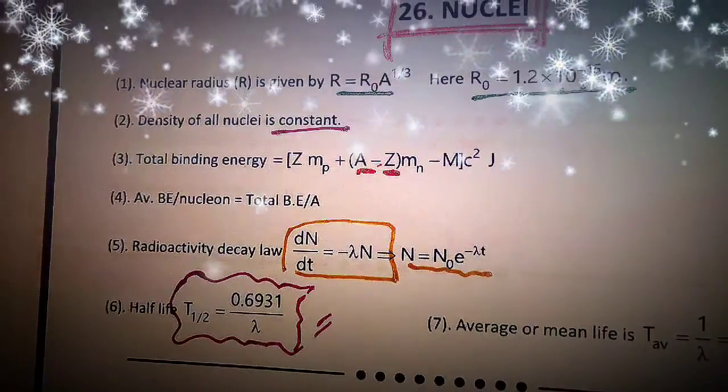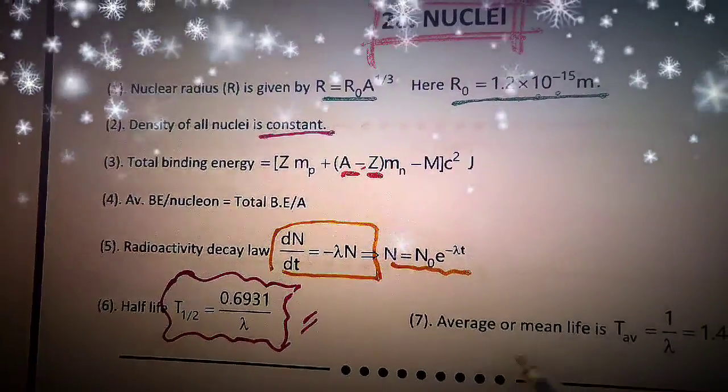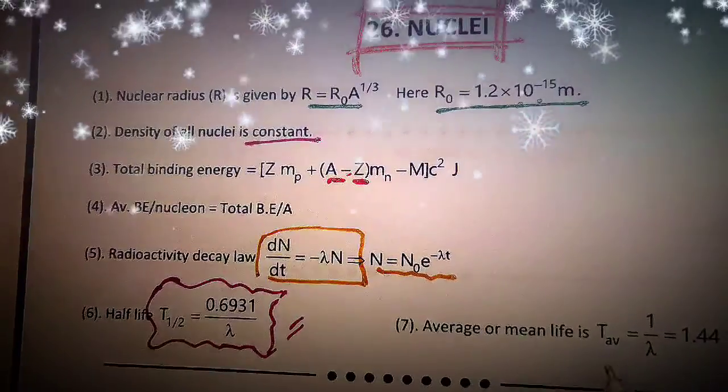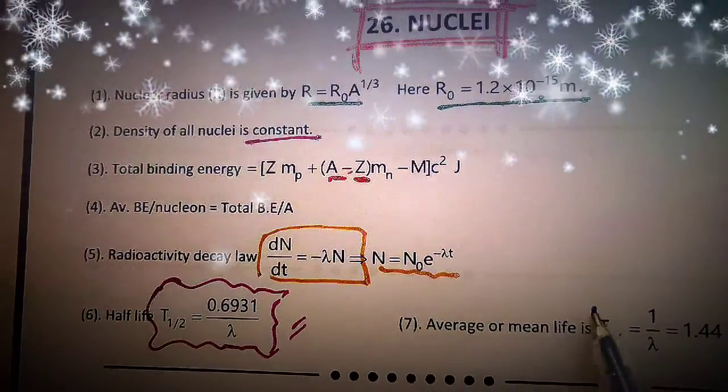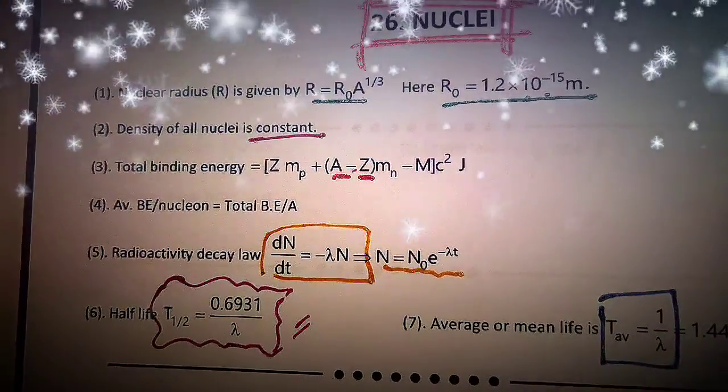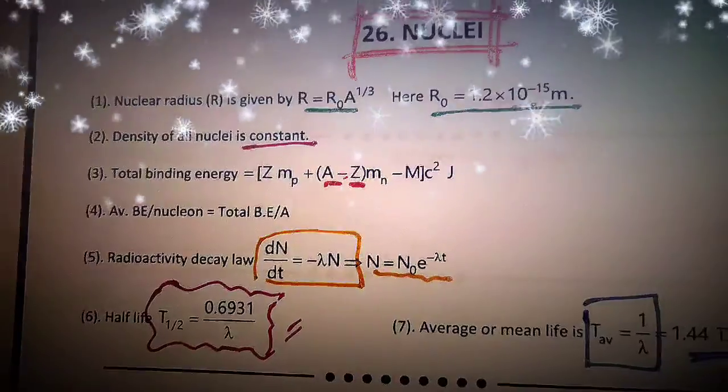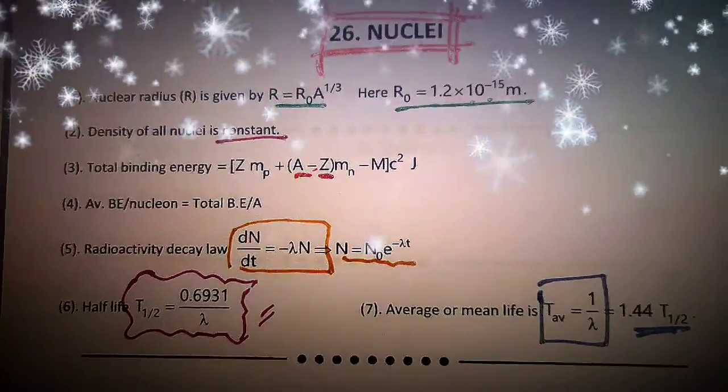Uske baad hai hamara average or mean life, that is called as T average, is 1 by lambda, ya phir 1.44 T half. That's it.